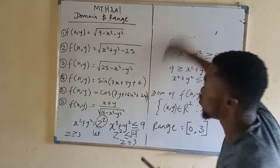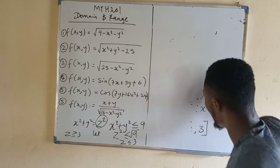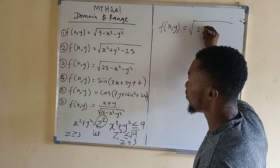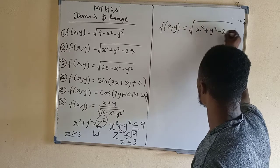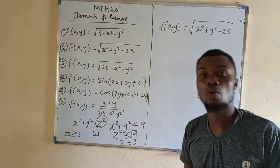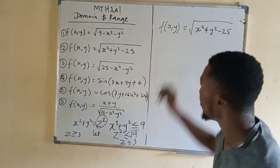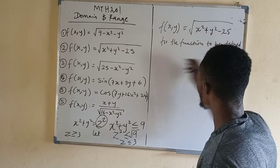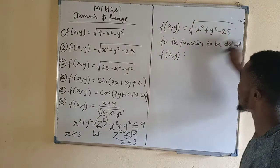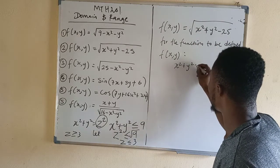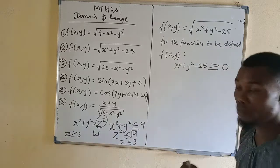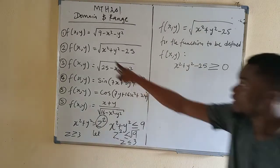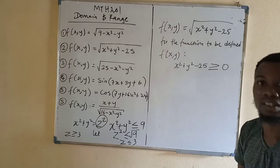For question number 2, f(x,y) is equal to square root of x squared plus y squared minus 25. Every square root function must be positive — it contains from zero to positive infinity, but can never contain any negative number. So for the function to be defined, x squared plus y squared minus 25 must be greater than or equal to 0. The negative term here is 25, so just take 25 to the other side.